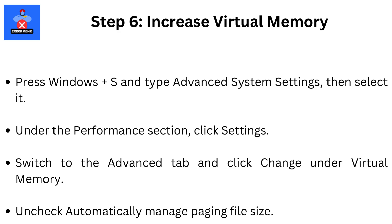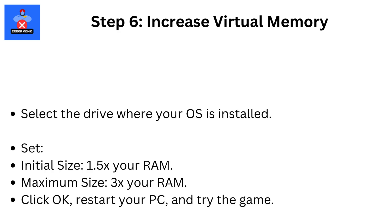Step 6: Increase Virtual Memory. Press Windows+S and type 'Advanced System Settings,' then select it. Under the Performance section, click Settings. Switch to the Advanced tab and click Change under Virtual Memory. Uncheck 'Automatically Manage Paging File Size,' select the drive where your OS is installed. Set Initial Size to 1.5x your RAM and Maximum Size to 3x your RAM. Click OK, restart your PC, and try the game.